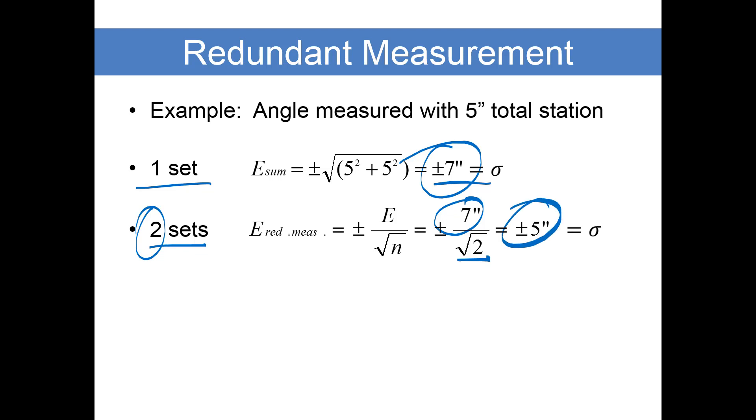If our first angle measured with one set direct and reverse was 7 seconds, if we do another set, we're taking that 7 seconds and dividing it by the square root of 2 sets, and that gives us plus or minus 5 seconds of precision.